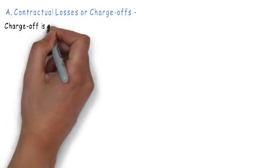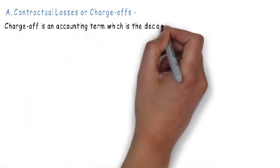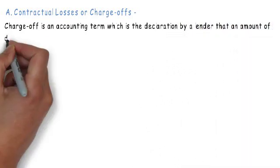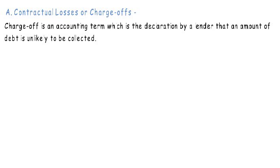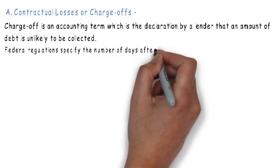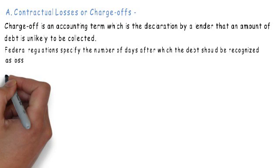Charge-off is an accounting term. It is a declaration by the bank that a certain amount of loan is unlikely to be collected. Hence, the loan is considered as a loss in the bank's book. Federal regulations specify the exact number of days after which a debt should be recognized as loss. The number of days differ by different types of loan.